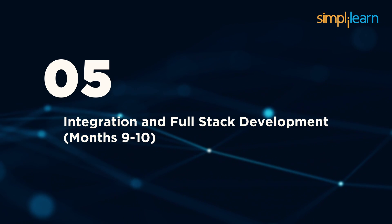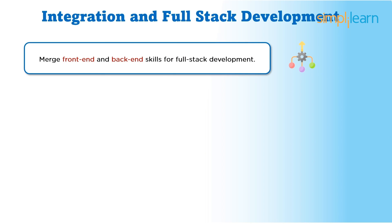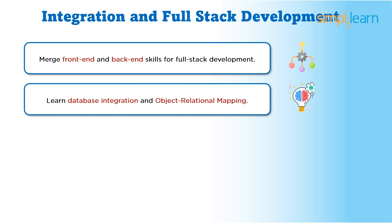Number five: integration and full-stack development, months nine and ten. Transitioning into months nine and ten, you'll merge your front-end and back-end skills to embark on full-stack development endeavors. This phase focuses on integrating databases with the back-end and building comprehensive web applications that encompass both client-side and server-side functionalities. You'll delve into concepts such as Object Relational Mapping (ORM), which facilitates seamless interaction between your application code and the database, including mapping database entities to object-oriented programming constructs, implementing data validation, and managing database transactions effectively.